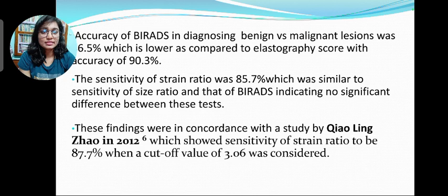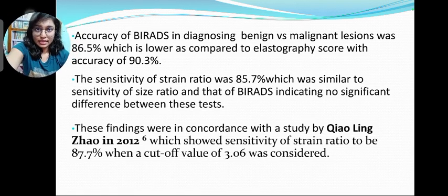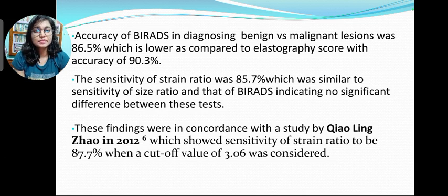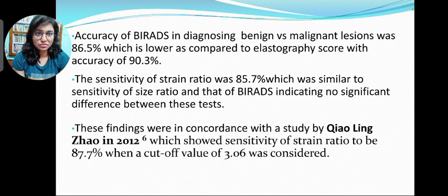Accuracy of BI-RADS in diagnosing benign versus malignant lesions was 86.5%, which is lower compared to elastography score with an accuracy of 90.3%. The sensitivity of strain ratio was 85.7%, which was similar to the sensitivity of size ratio and that of BI-RADS, indicating no significant difference between these tests. These findings were in concordance with a study by Xiao Ling Zhao in 2012, which showed sensitivity of strain ratio to be 87.7% when a cut-off value of more than or equal to 3.06 was considered.